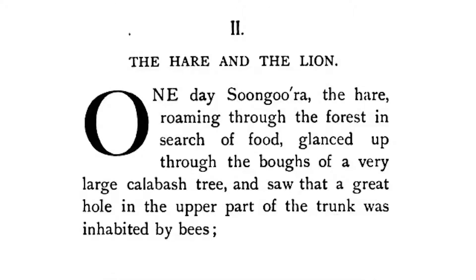The story begins: "One day, Tsungora, the hare, roaming through the forest in search of food, glanced up through the boughs of a very large calabash tree and saw that a great hole in the upper part of the trunk was inhabited by bees." Here the author is setting the stage by introducing the characters, the setting, and other background information. Look at the words that help to set the stage: day, Tsungora, hare, roaming, forest, search, food.